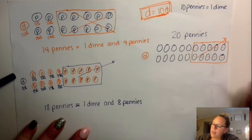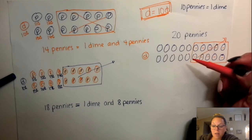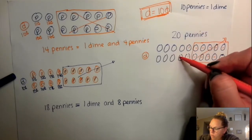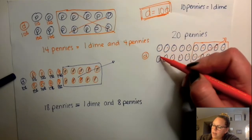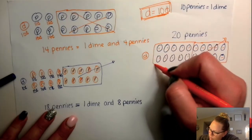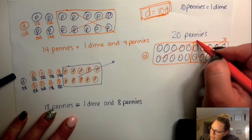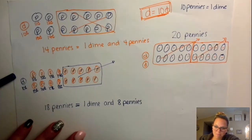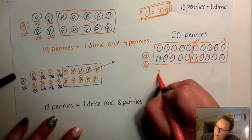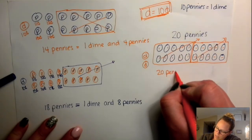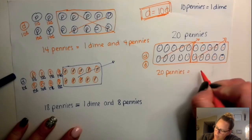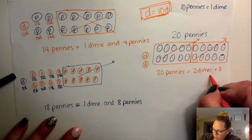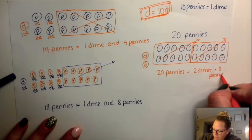Let's see if I have another 10 pennies. If I don't, I can't exchange it. But if I have 10, I can change it out for another dime: 1, 2, 3, 4, 5, 6, 7, 8, 9, 10. I do! So I can take those 10 pennies away and replace it with a dime. So what did we just learn? 20 pennies is equal to two dimes and zero pennies.